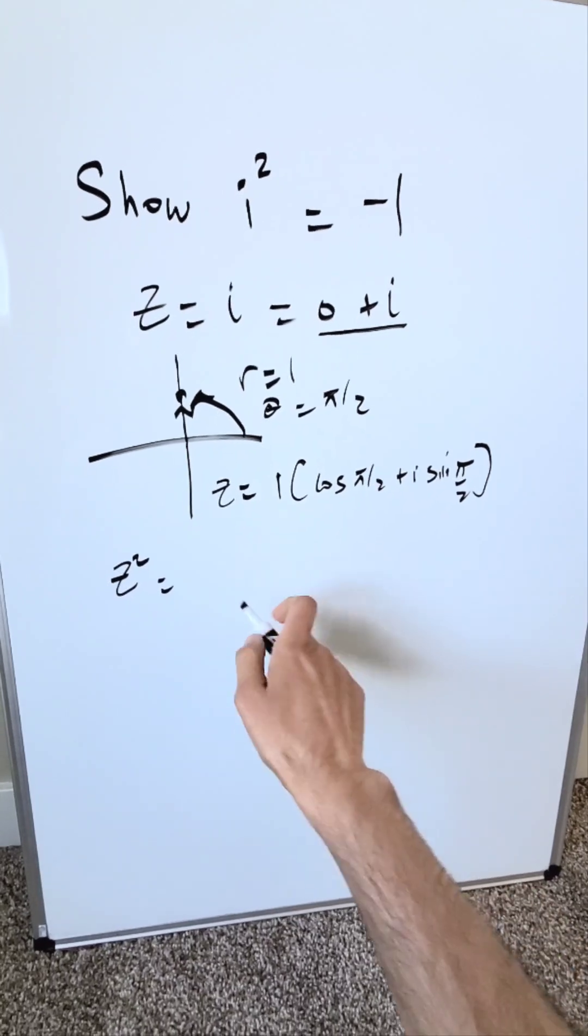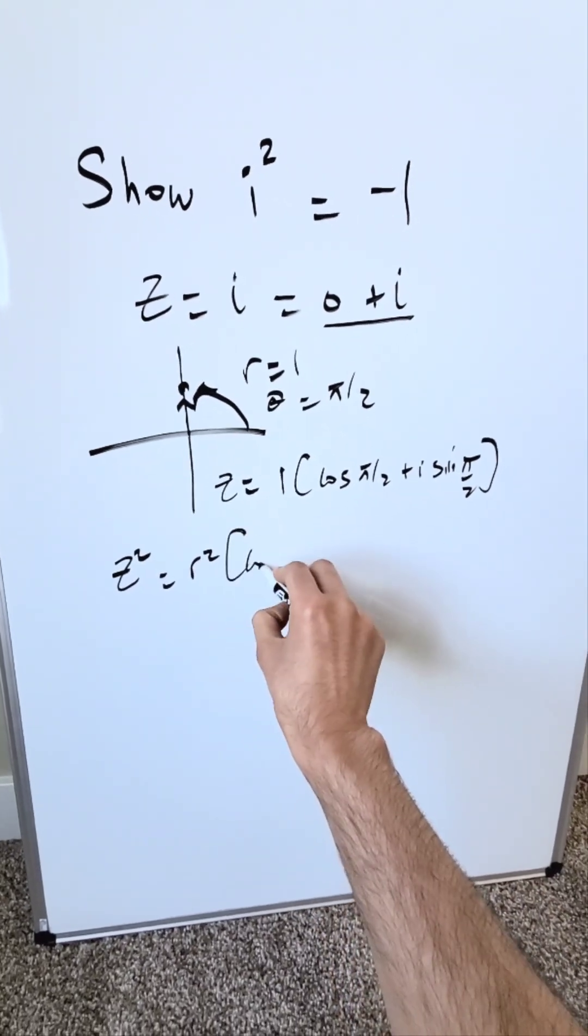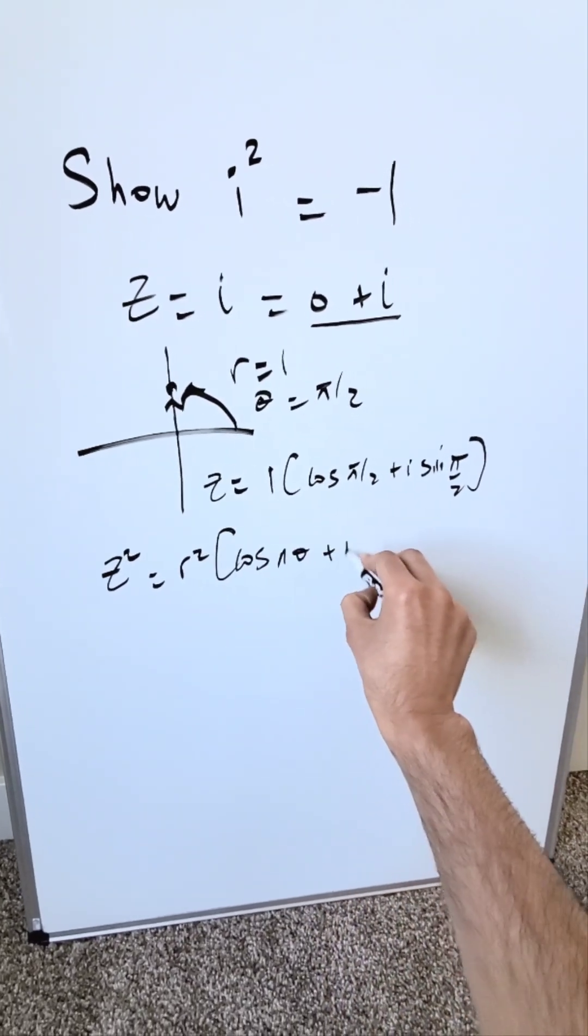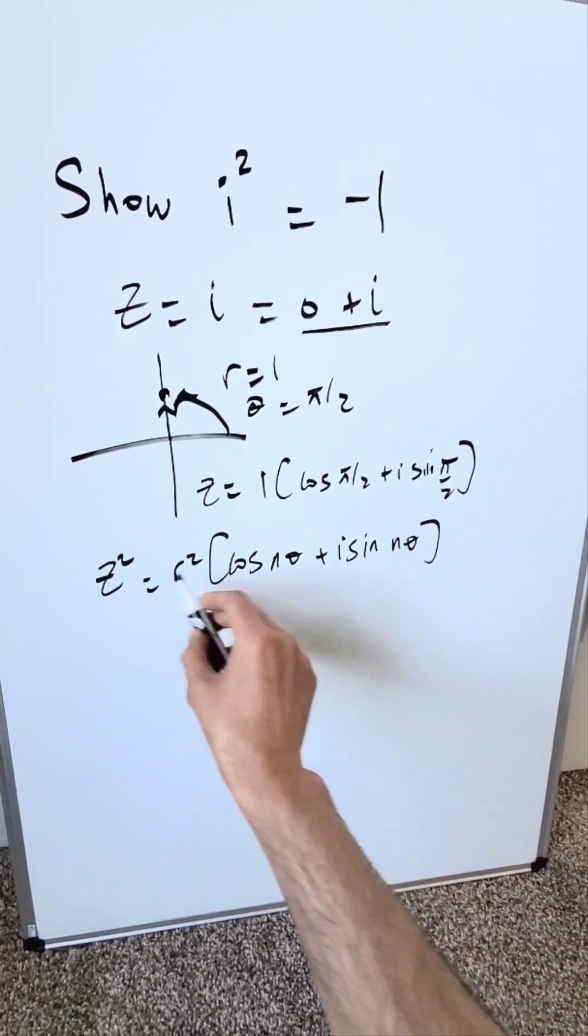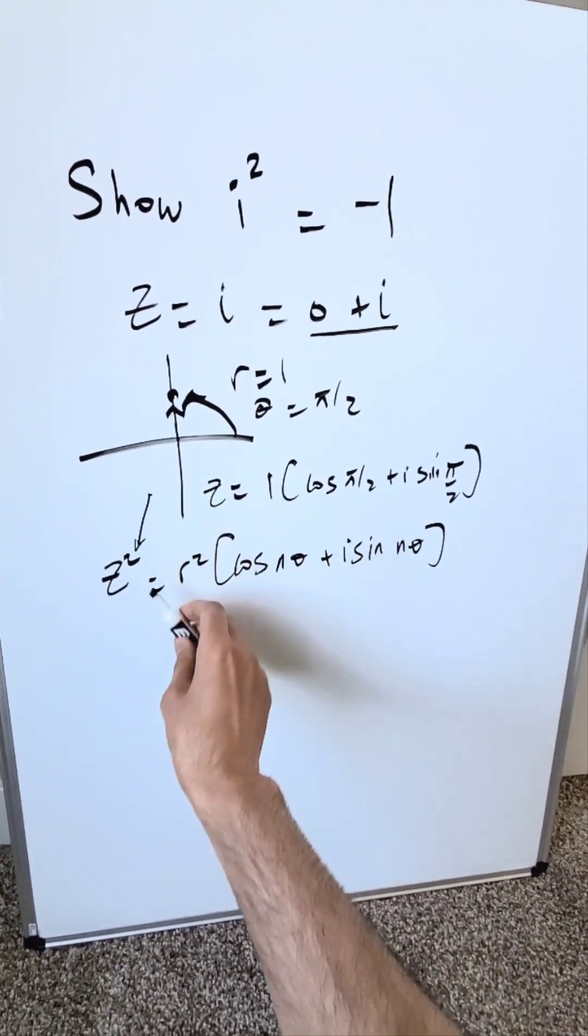Your formula for powers of a complex number, which is going to be r squared. Then you have cosine n theta plus i sine n theta, where your n value here is going to be 2. Because this right here, your square represents your n.